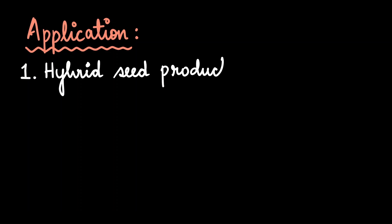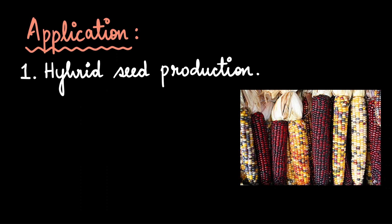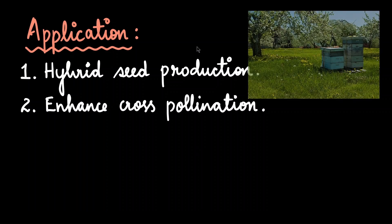There are several applications of pollen-pistil interaction. The first is producing hybrid seeds — for crops like corn, knowing the pollination process allows us to create pollination between two different plants, leading to hybrid seed production. The second is enhancing cross-pollination in fruit crops like apple, where farmers introduce bees into orchards to ensure proper pollination, resulting in sweeter and more numerous fruits.